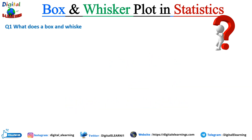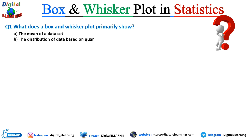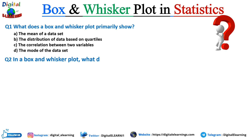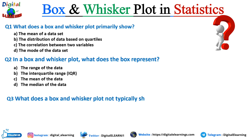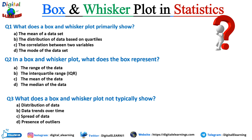Question 1: What does a box and whisker plot primarily show? A) The mean of the data set, B) Distribution of the data set based on quartiles, C) Correlation between two variables, D) Mode of the data set. Question 2: In a box and whisker plot, what does the box represent? A) The range of data, B) The interquartile range (IQR), C) The mean of data, D) The median of data. Question 3: What does a box and whisker plot NOT typically show? A) The distribution of data, B) Data trends over time, C) Spread of data, D) Presence of outliers. Leave your answers in the comment section below.